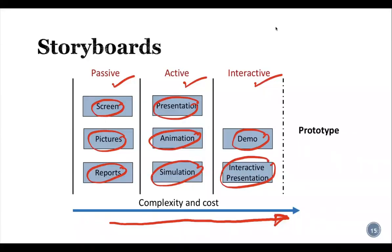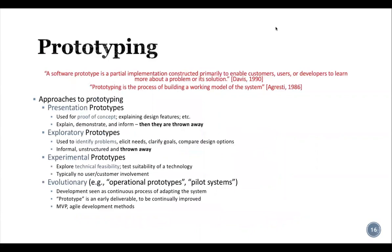The third early validation technique is prototyping. A software prototype is a partial implementation constructed primarily to enable customers, users, or developers to learn more about a problem or a solution (Davis, 1990). Approaches to prototyping include a presentation prototype, explanatory prototype, experimental prototype, or evolutionary prototype. Presentation prototypes are commonly used for proof of concept and explaining design features; once they explain, demonstrate, and inform, they are thrown away.